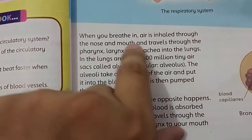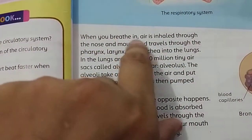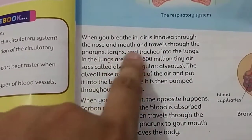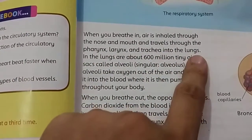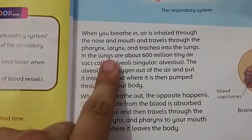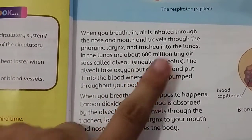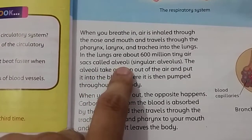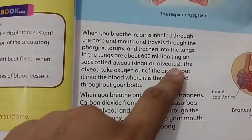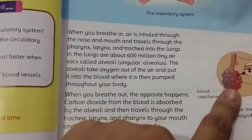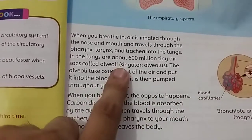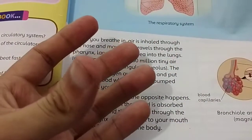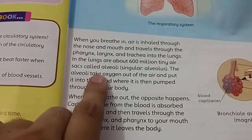When you breathe in, air is inhaled through the nose and mouth and travels through the pharynx, larynx, and trachea into the lungs. In the lungs there are about six million tiny air sacs called alveoli — the singular form is alveolus. When there is just one, we say alveolus; when there are many, the plural is alveoli.